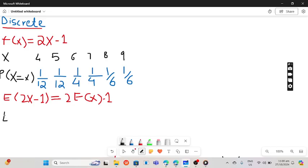E of x will be multiplying these values: 4 times 1 by 12, plus 5 multiplied with 1 by 12, plus 6 multiplied with 1 upon 4.